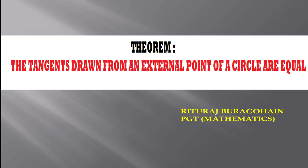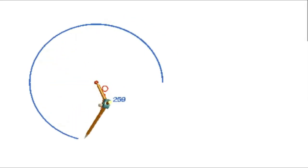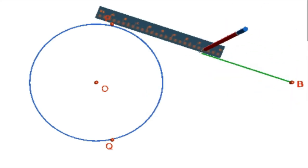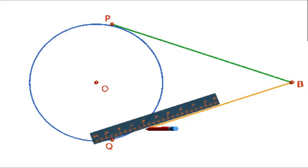Theorem: The tangents drawn from an external point of a circle are equal. At first we shall draw a circle centered at O of radius 5 centimeters. Then we shall take two points P and Q on the circle. We shall take an external point B outside the circle, then we shall join BP and BQ.